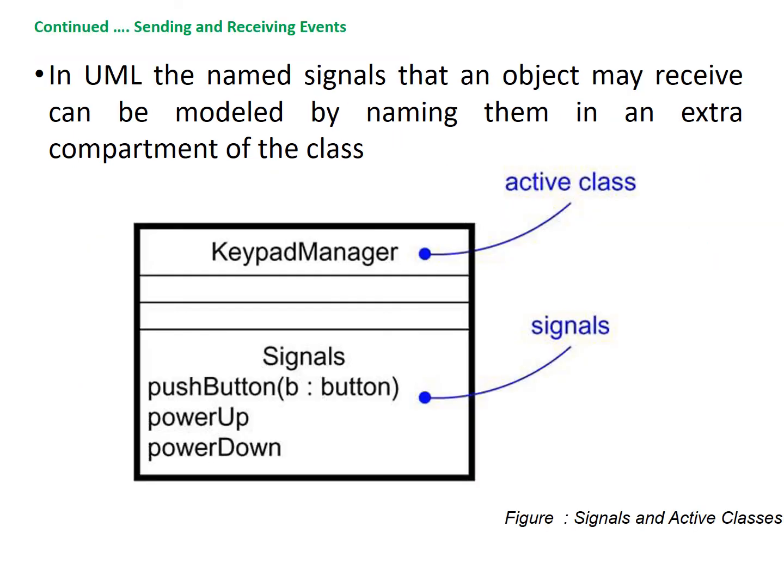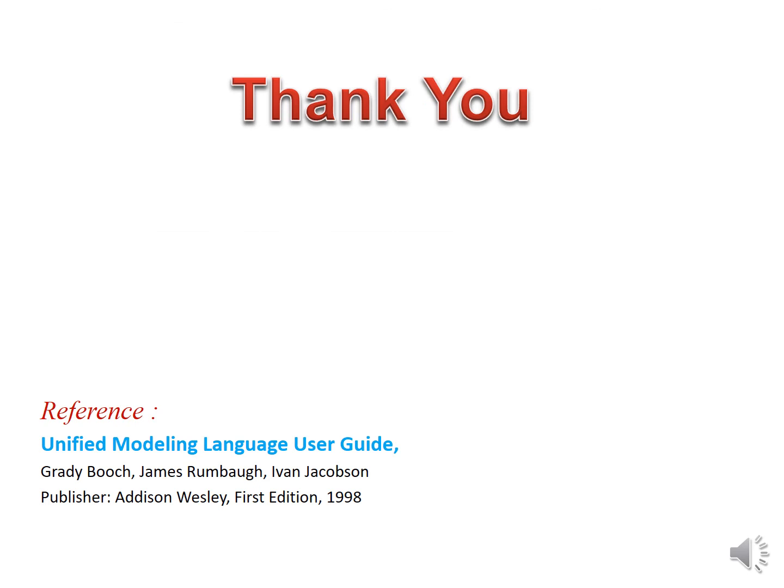In UML, you model the call events that an object may receive as operations on the class of that object. The named signals that an object may receive can be modeled by naming them in an extra compartment of the active class. As shown in this figure, the active class is KeypadManager with an extra compartment for signals, and the signals are Push Button, Power Up, and Power Down. That is the end of this presentation. Thank you.